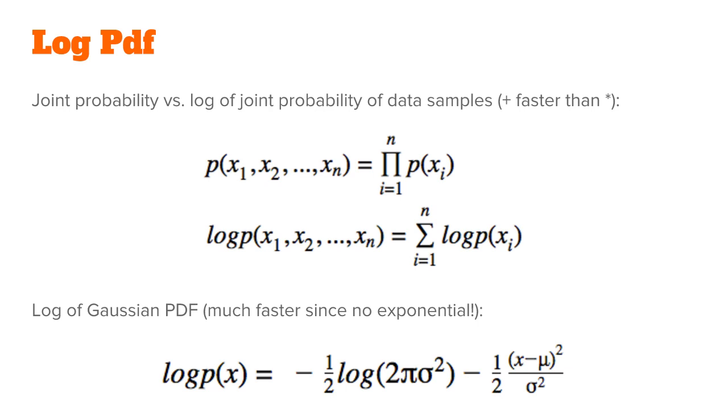As you know, adding is a cheaper operation than multiplying, so this saves us time. Because the form of the Gaussian is exponential, when you take the log of an exponential, the exponential goes away, so this also saves us time, because the exponential is also a costly operation.